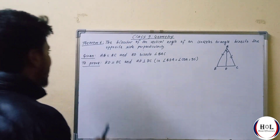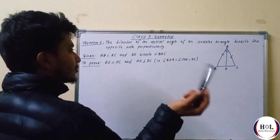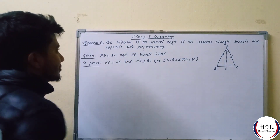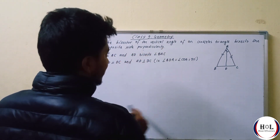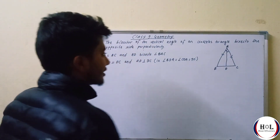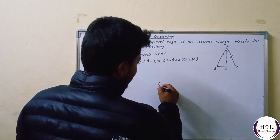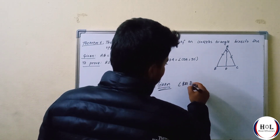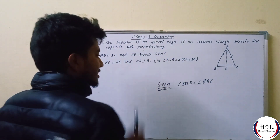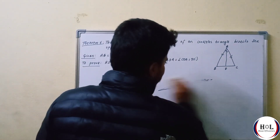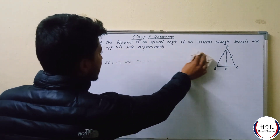This particular problem is: we have triangle ABC, an isosceles triangle. We have two sides equal — AB equals AC. So we have to prove this. We have to add the proof.